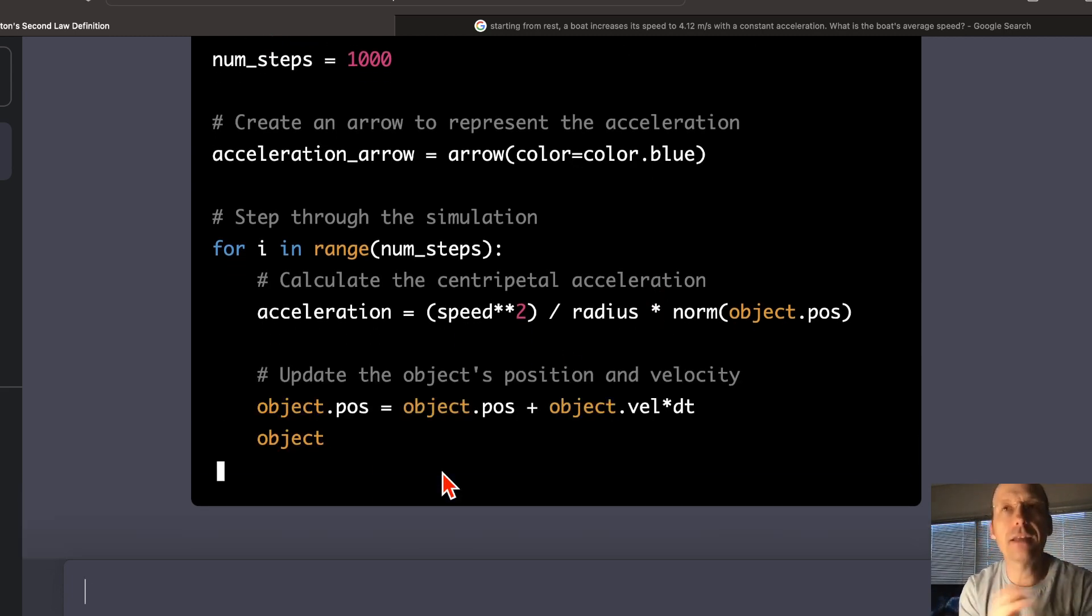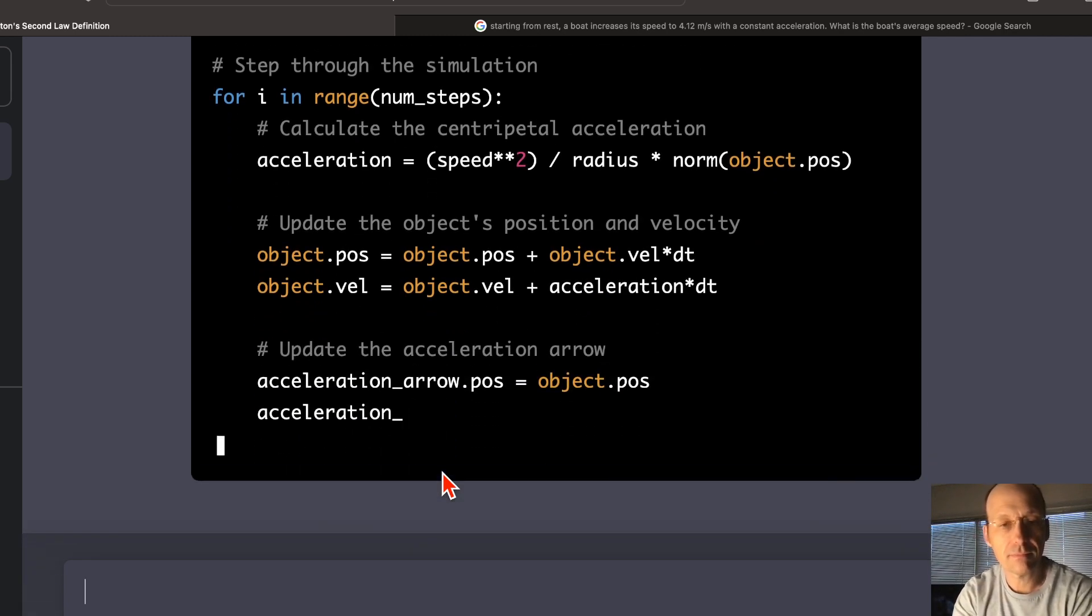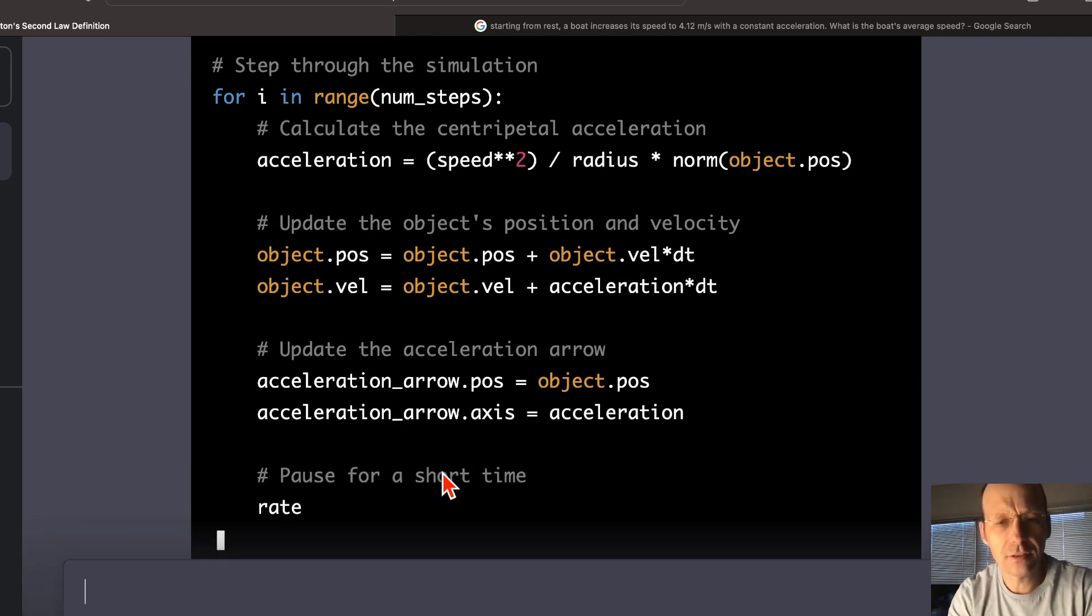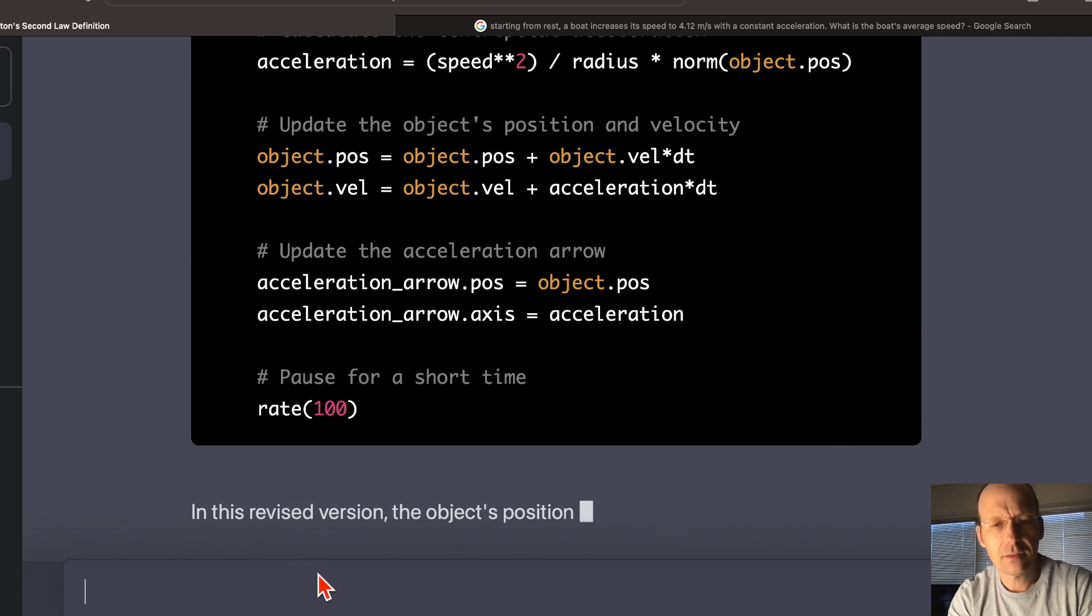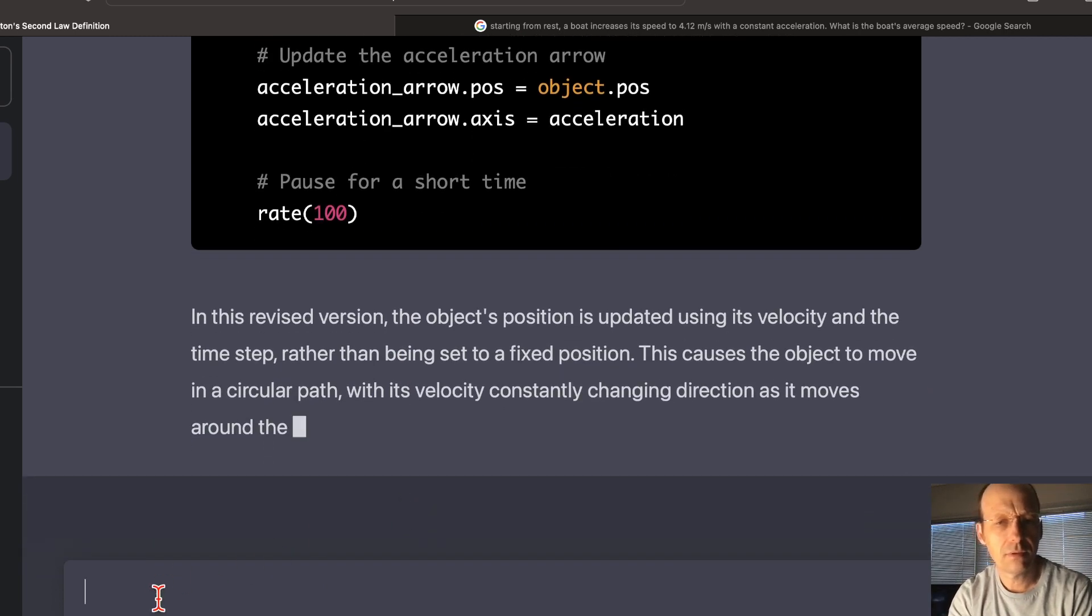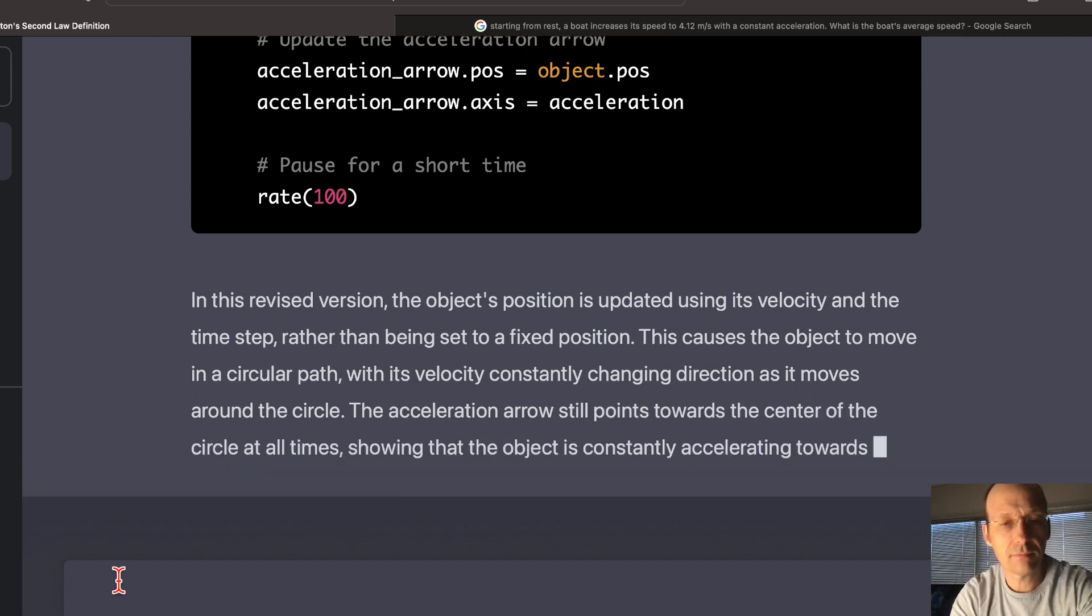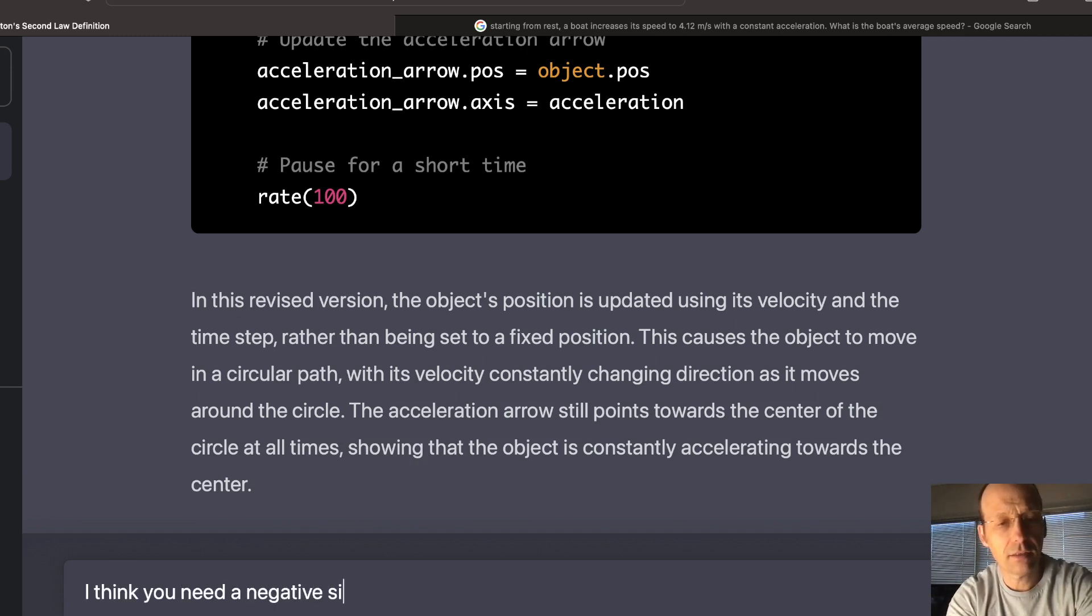I'm going to tell it. I'm going to tell it and see if it fixes it. I don't know what it changed. The object position name velocity and the time step rather than being set to fix... But, that's not true. Okay, let's see. Oh, it does stop sometimes. The acceleration still points towards the center. Okay. I think you need a negative sign in front of your acceleration... in your acceleration calculation.